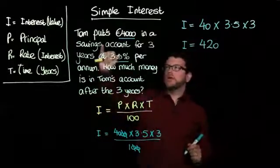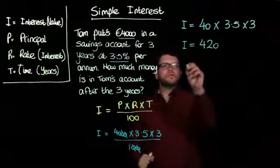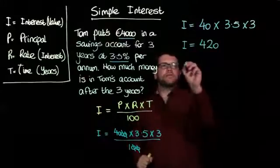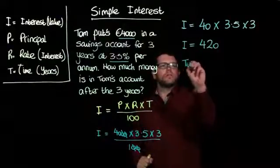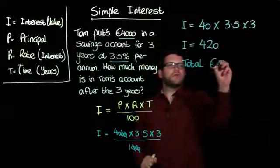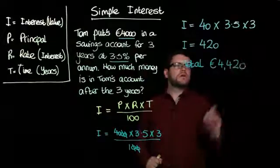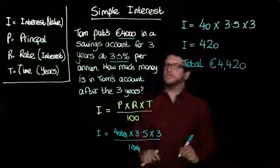But remember, there was the principal. So the principal was €4,000. So we add on the interest to the principal. So the total is going to be €4,420. And that's a standard simple interest question.